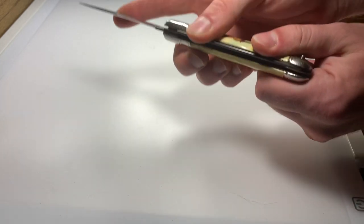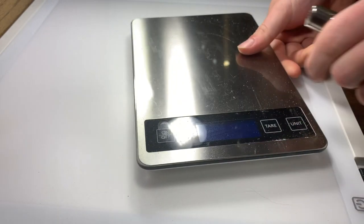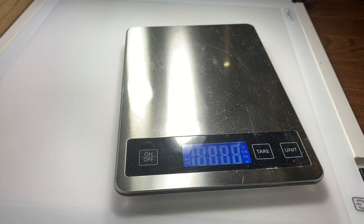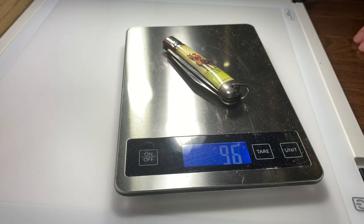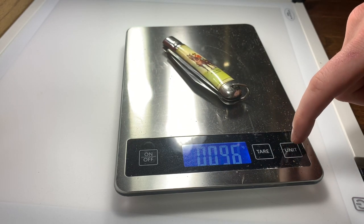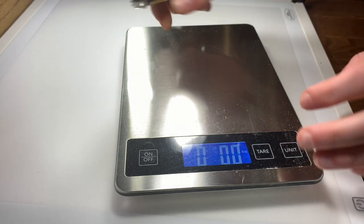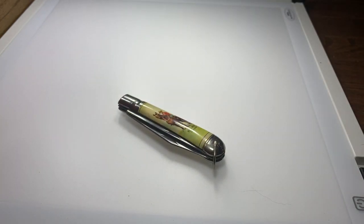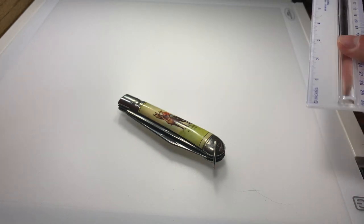All right so we'll take weight measurement first. Let's bring our scale out. Okay we'll drop that on there we see it's 96 grams or 3.4 ounces. So it's a pretty light knife which you would expect with these shell scales, definitely not anything luxurious but you know they get the job done and for a souvenir knife that's really all you need.